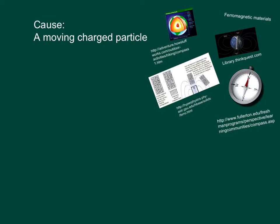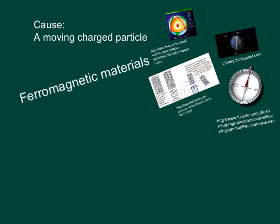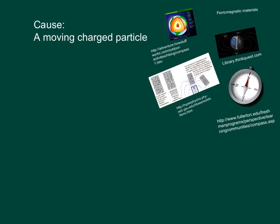What causes magnetism is some sort of moving charged particle. Some materials are ferromagnetic — ferro, Fe, iron — iron-magnetic materials. And really what causes them to be magnetic is the fact that they have a whole bunch of unpaired electrons.